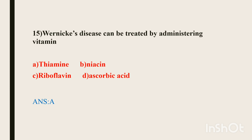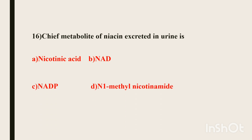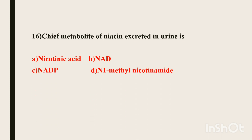Sixteenth question. Chief metabolite of niacin excreted in urine is — Option A: nicotinic acid, Option B: NAD, Option C: NADP, Option D: N1-methylnicotinamide. The correct answer is N1-methylnicotinamide.